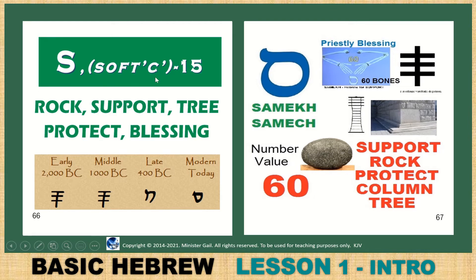Samek — S or soft C, the 15th letter. It looks like a round shape — it is not an O. Rock, support, tree, protect, blessing. It looked like a tree back in 2000 BC; now it looks like a rock today — the support, the chief cornerstone to build your church on. The priestly blessing uses 60 bones in the arms. Value of 60 — your rock, your support. Jesus Christ is the chief cornerstone, Isaiah 28, Acts 4 — Jesus is the name to be saved by today, for all Jew and Gentile.